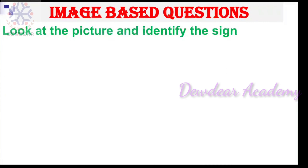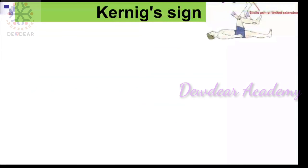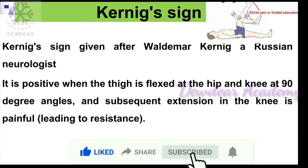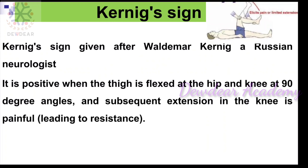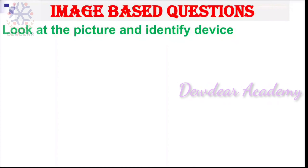Look at the picture and identify the sign. The answer is Kernig's sign. Kernig's sign is named after Waldemar Kernig, a Russian neurologist. It is positive when the thigh is flexed at the hip and knee at 90-degree angles and subsequent extension of the knee is painful. This may indicate subarachnoid hemorrhage or meningitis.